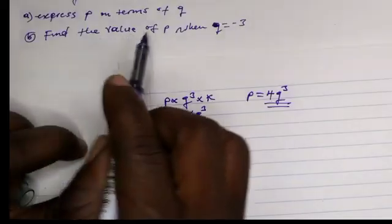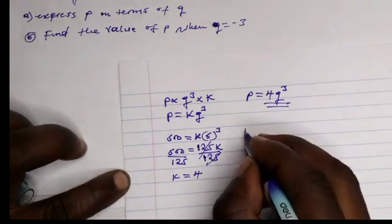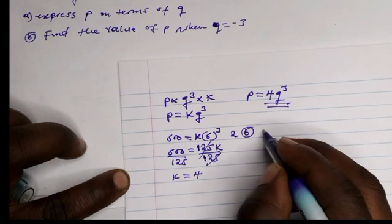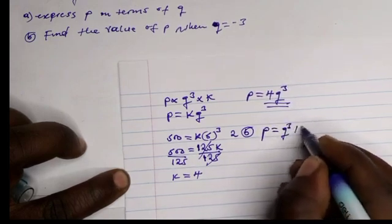For part b, find the value of p when q equals minus 3. This is problem 2b. We use the same formula: p equals k times q cubed.